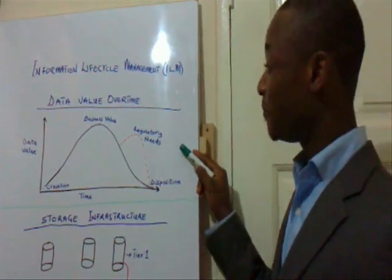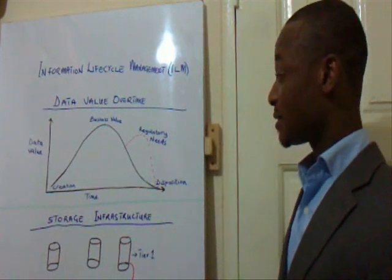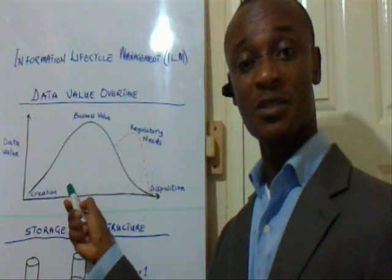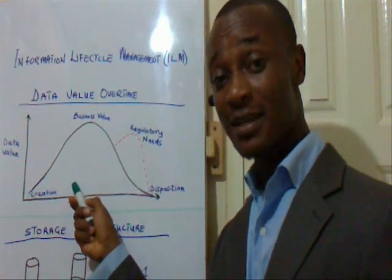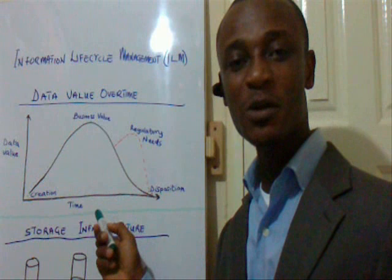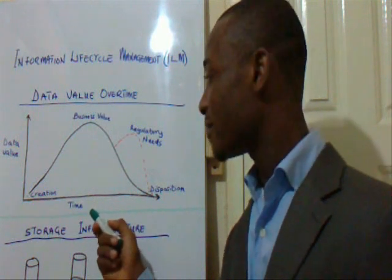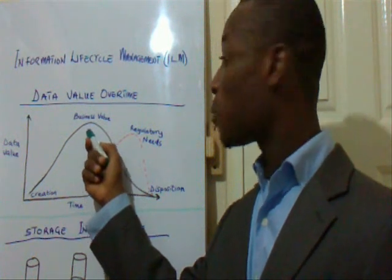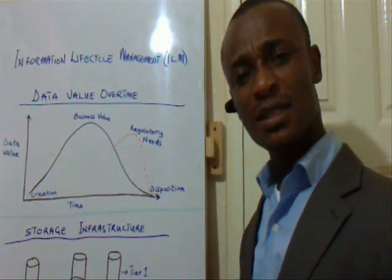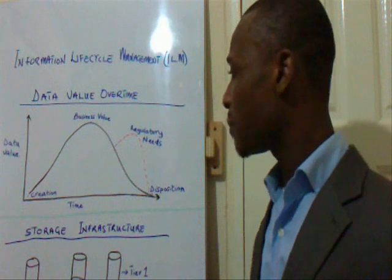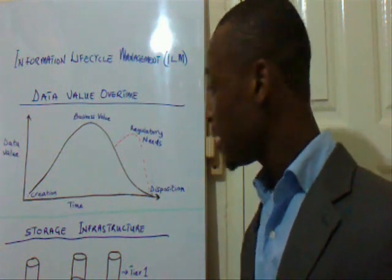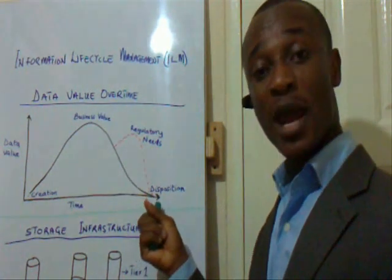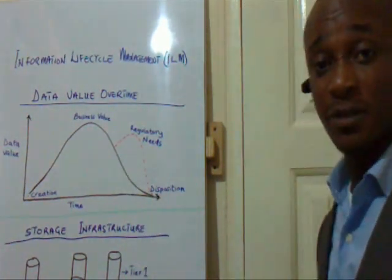Looking at the graph here, you will notice that once information is created — that is, records from their point of origination, which could be internal or external, for example email, reports, articles, publications, etc. — it begins to grow by satisfying business needs to the point where it begins to generate business decisions and further document it for other purposes. But with time, its usage and importance decline to where it has met its retention period for disposition.